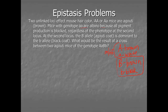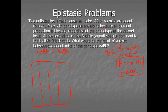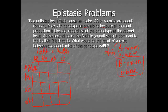The question asks: what would the result of a cross between two agouti mice with the genotype big A, little a, big B, little b crossed with big A, little a, big B, little b? We know we need our big 16-box Punnett square. We foil our parents: the first A and first B, the outer A and outer B, the inner A and inner B, and the last A and last B. Then we go through and fill in the Punnett square.